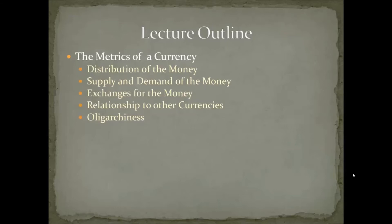Relationship to other currencies is another important feature. Certain currencies tend to be deeply interrelated with each other. For example, the US dollar and the euro are incredibly closely connected, as are the US dollar and the yuan and the US dollar and the yen. This is because of a variety of political and other factors.